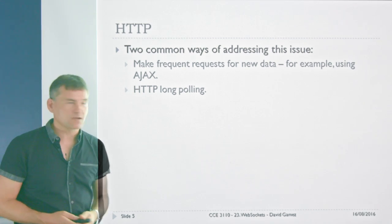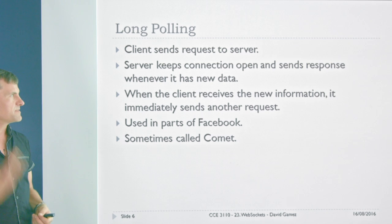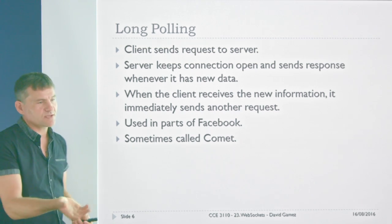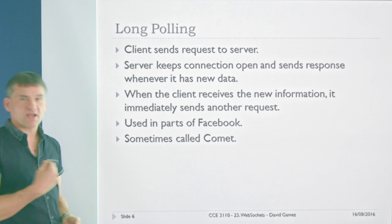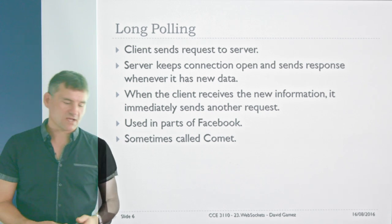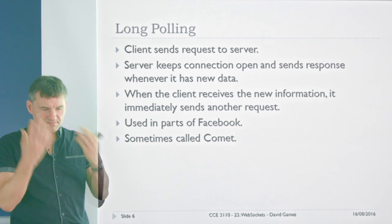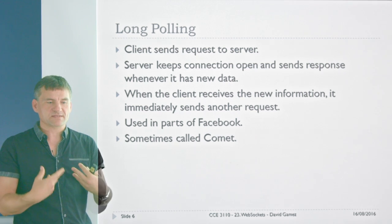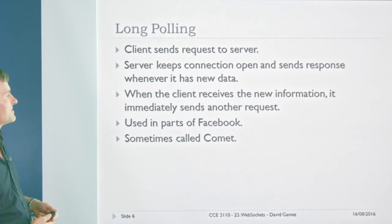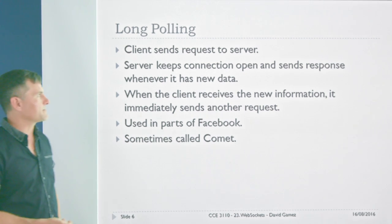A slightly better solution is HTTP long polling, where the client sends a request to the server but the server doesn't respond immediately. Instead, it keeps the connection open and sends the response when it has new data. So the client sends a GET for its email, the server just sits there, and when a new email comes in it replies to the client's request. Once the client receives the response, it immediately sends another request. This is more efficient — the server only responds when it actually has new information, without this constant update cycle of endless requests. Parts of Facebook and Gmail have used this, sometimes called COMET.